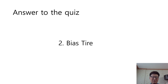Now it's time for the answer to the quiz. Which tire has a bigger change in the effective rolling radius according to the vehicle velocity change — radial tire or bias tire? The answer is number 2, bias tire. I think all of you have hit the right answer.